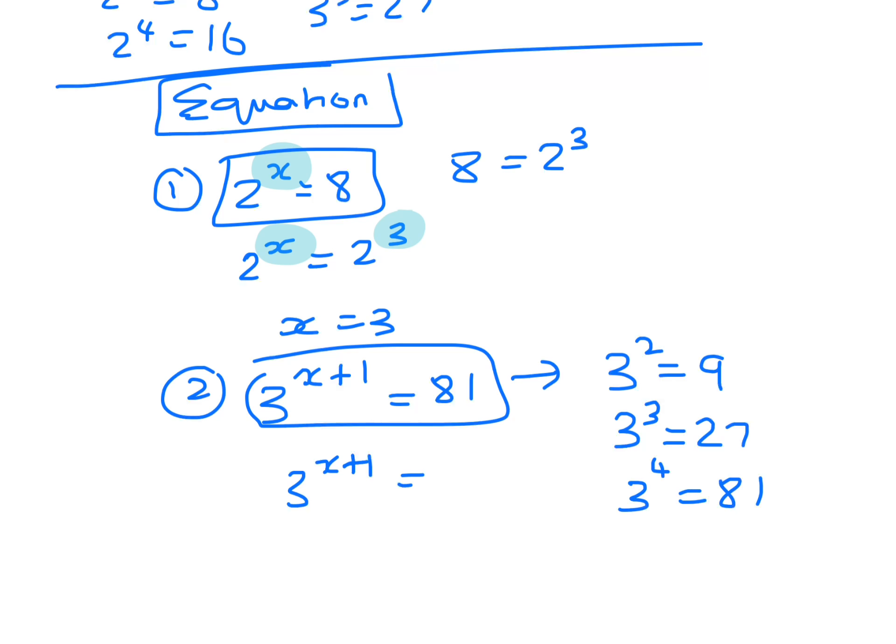3 to the 4, yep, that will be 81. So write it in index form as 3 to the power of 4, and then you can just equate the indices. So you just end up with x plus 1 equals 4. So x is 4 minus 1, so x equals 3.